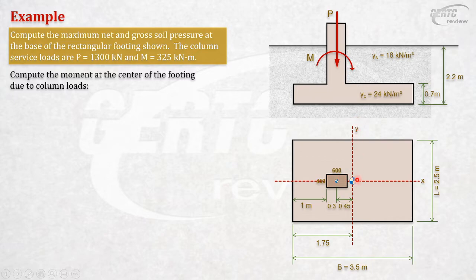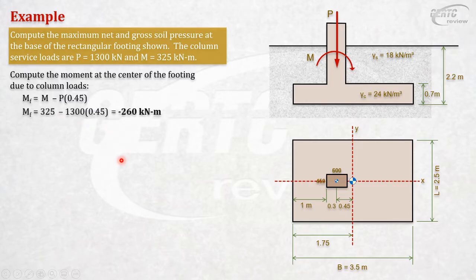Now we can get the moment at the centroidal y-axis. Let's use the sign convention: clockwise plus, counterclockwise minus. Your M is clockwise, so it's positive M. Then minus P times 0.45, because when P acts this way, it creates a counterclockwise moment. M = 325 - 1300(0.45) = negative 260 kN-m. If this were zero, it would mean uniform soil pressure.